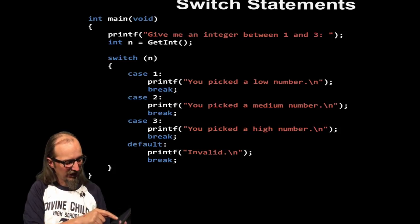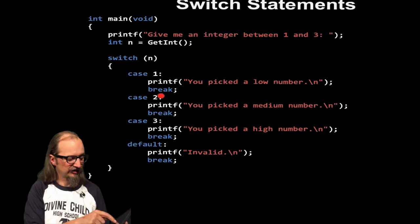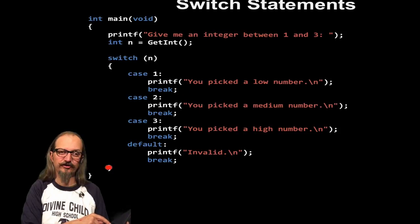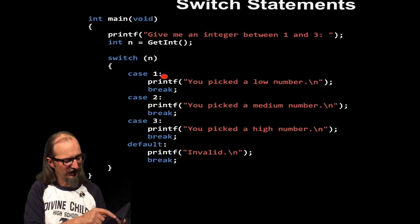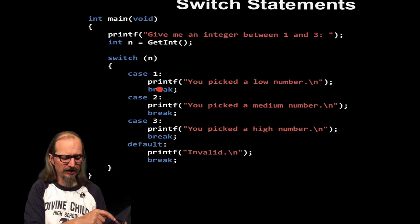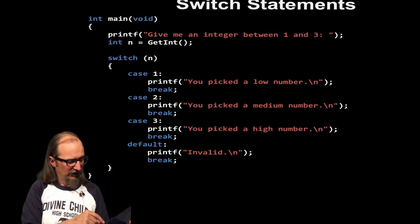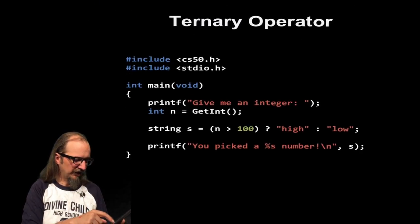And you'll notice it says, case one, printf, you picked a low number, break. That means stop here and jump down to this curly brace. So when you hit the break, you jump to the curly brace. But we'll only get to this break if case one is true. So if I put a one in, case one is true, we'll get to here and we'll jump down to our break. Same for two or three. Not so bad.